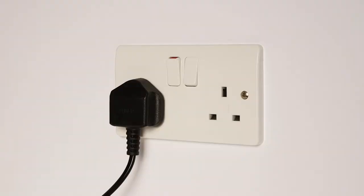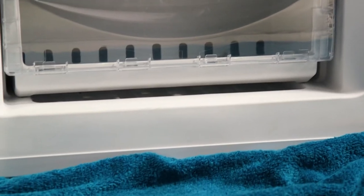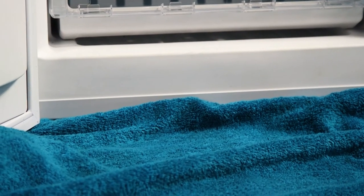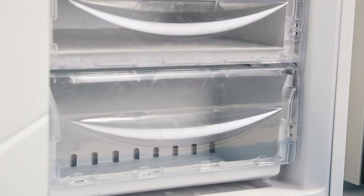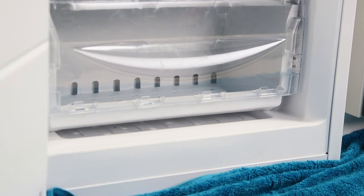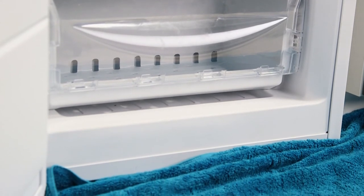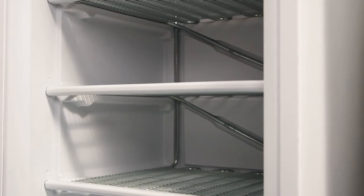To defrost your freezer start by unplugging it from the mains. Then place towels around the fridge freezer to soak up any water whilst it is defrosting. Leave the freezer door open until the solid ice starts to melt away from the walls and top of freezer. Remove the freezer compartments and allow the ice to melt off.